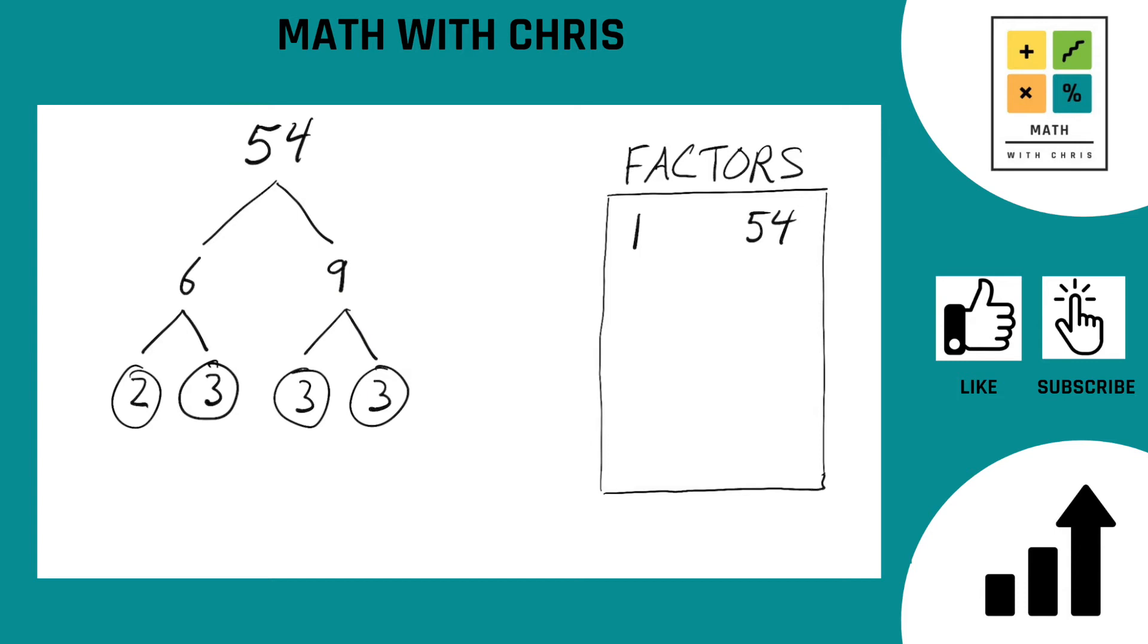And that means the prime factors of 54 are 2 times 3 times 3 times 3. Let's write that out down here. 2 times 3 times 3 times 3. And that does indeed equal 54 as it should. So we're done with this part of it.